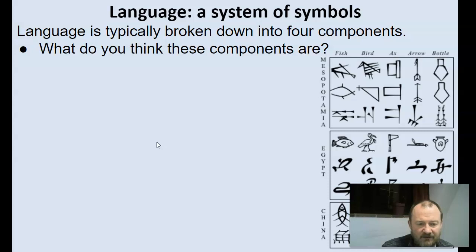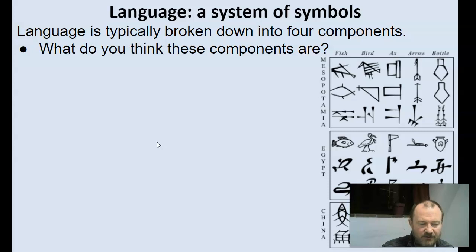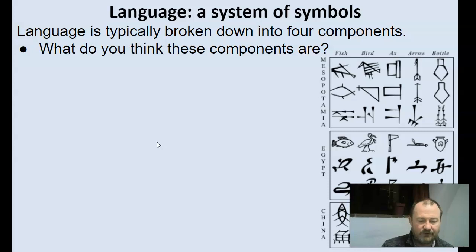Language is a system of symbols, and just to show how different those symbols can be, here are a couple of examples from history. A related question is: what are the components of language? What are the parts that make up language — that constitute the whole of language? There are four components. What do you think these components are?